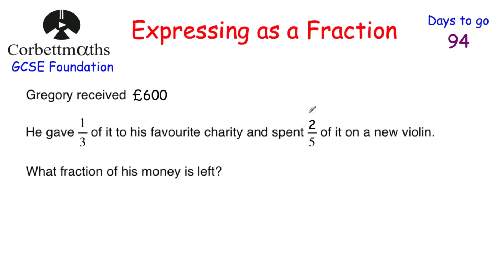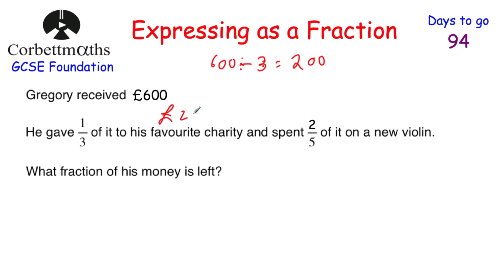Here's a wordy question using fractions of amounts and expressing as a fraction. Gregory received £600. He gives a third of it to his favourite charity, and he spends two fifths of it on a new violin. What fraction of his money does he have left? First, a third of 600: 600 divided by three is 200, so he gives £200 to charity. Be careful — it says two fifths of the amount received, not the remaining money.